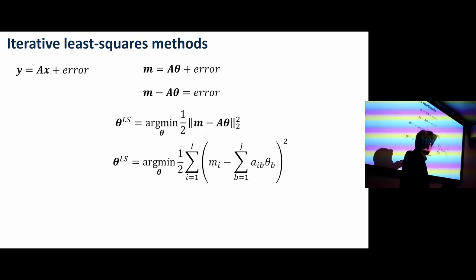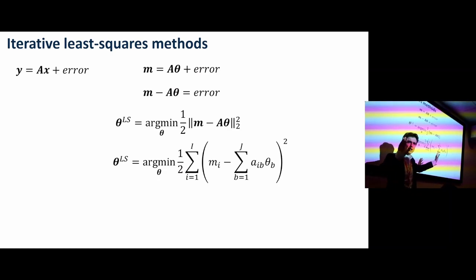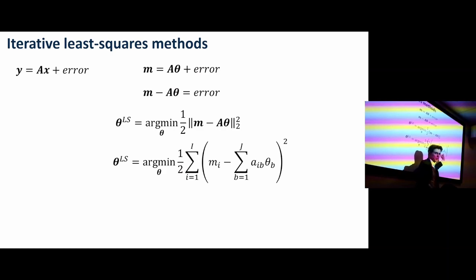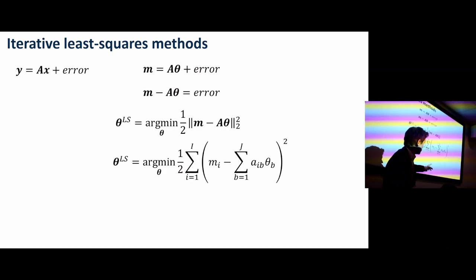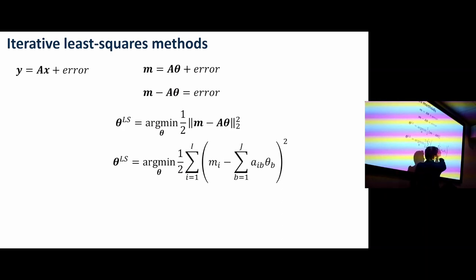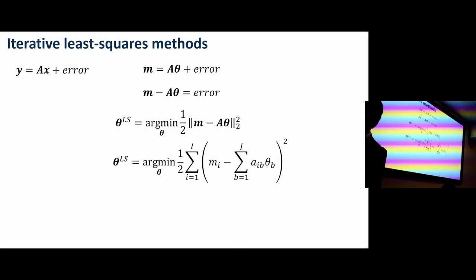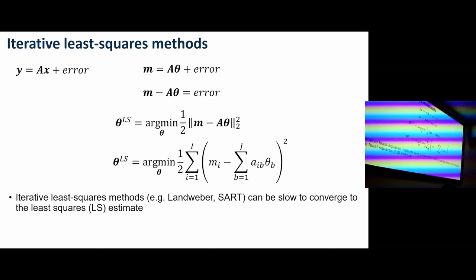Here it is written in subscript notation. I'm summing over b because I'm doing a matrix vector multiplication — forward modeling. When I've done that summation, I only have a dependency on i left behind, which means I can compare with m_i, the measured data.